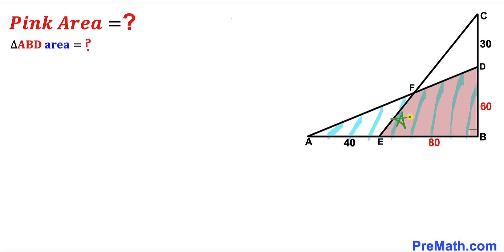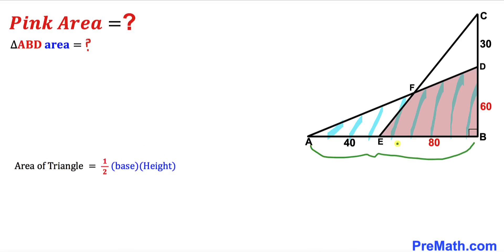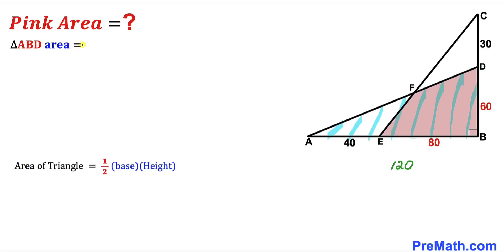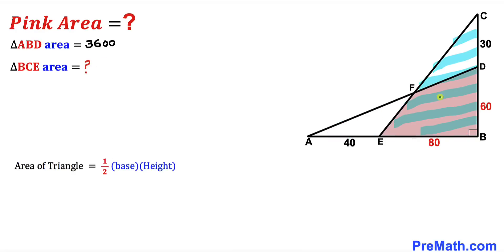Our very first step: let's focus on right triangle ABD and calculate its area. Recalling the area formula — area equals one-half times base times height — the base of this triangle is 40 plus 80, which makes 120, and the height is 60. So the area of triangle ABD is one-half times 120 times 60, which simplifies to 3600 square units.